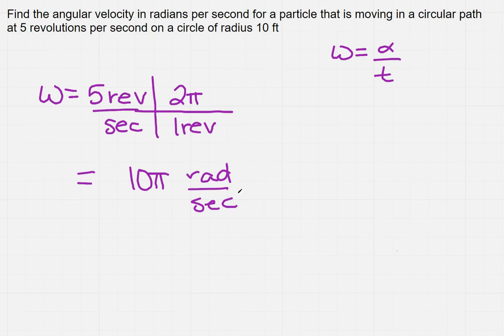Now, if 10 pi, that works for some instructors. Some instructors, you'll need to actually find a decimal number. So when I multiply 10 times pi, I get 31.416 radians per second.